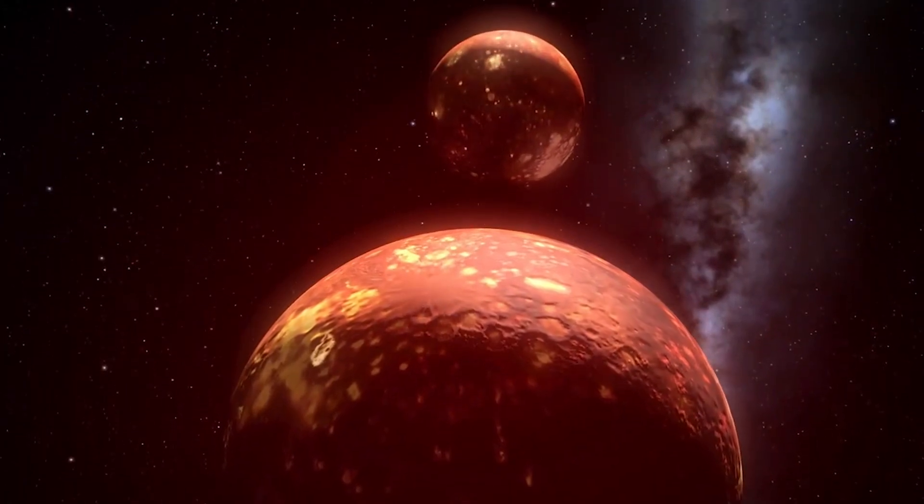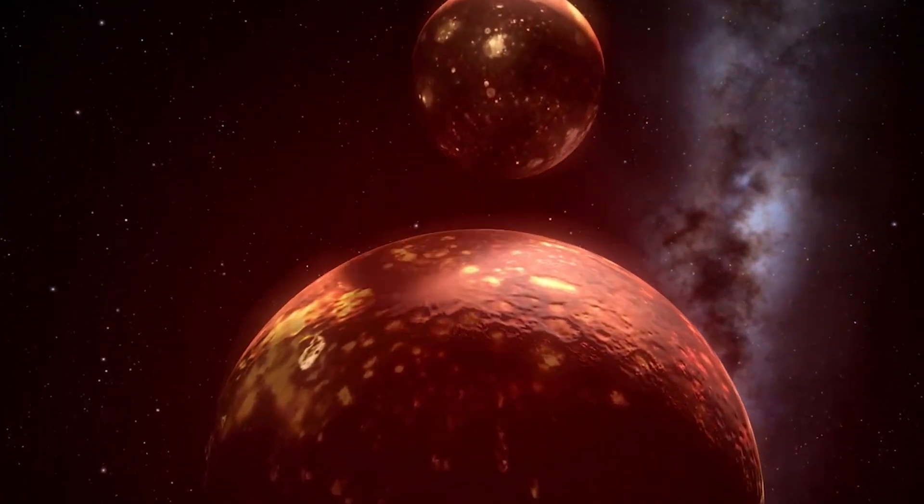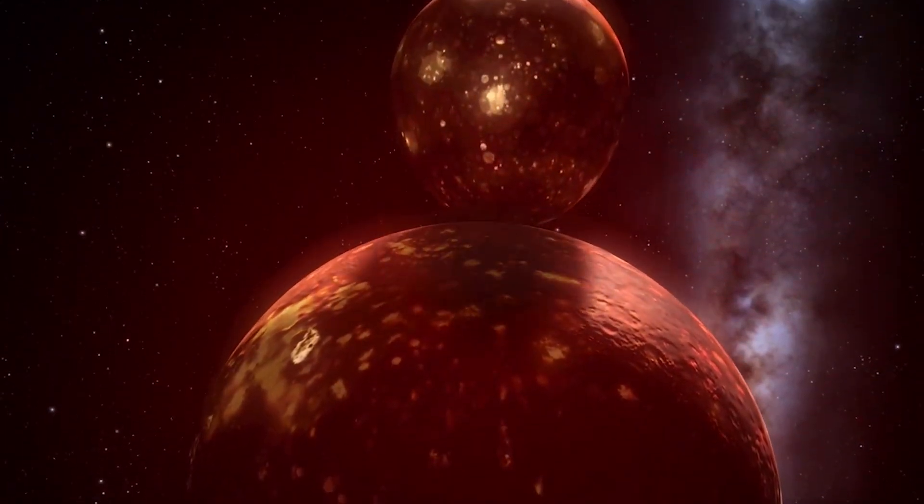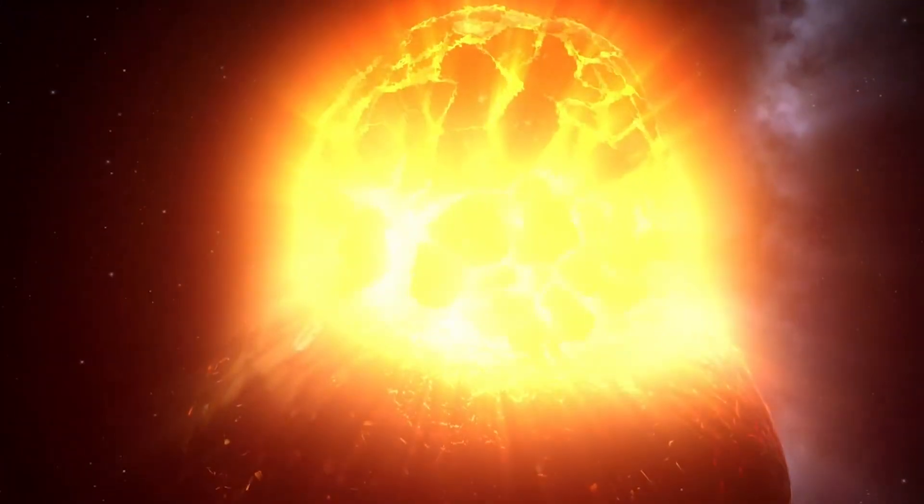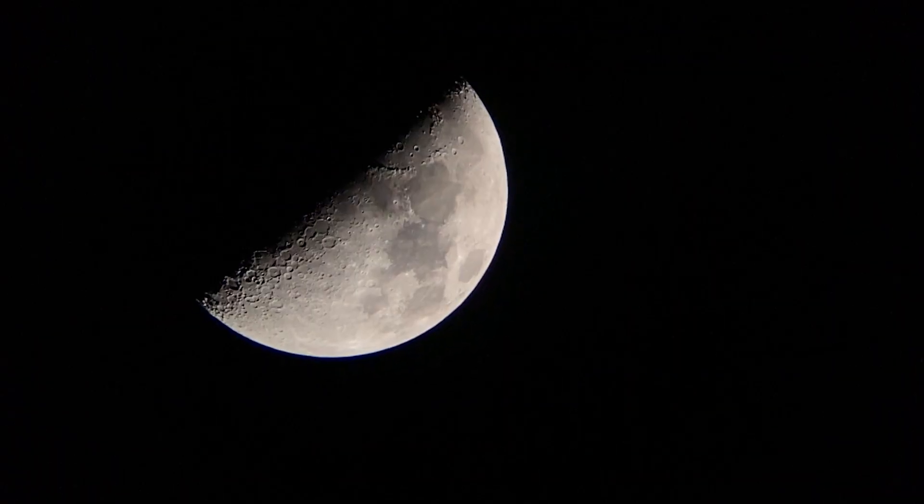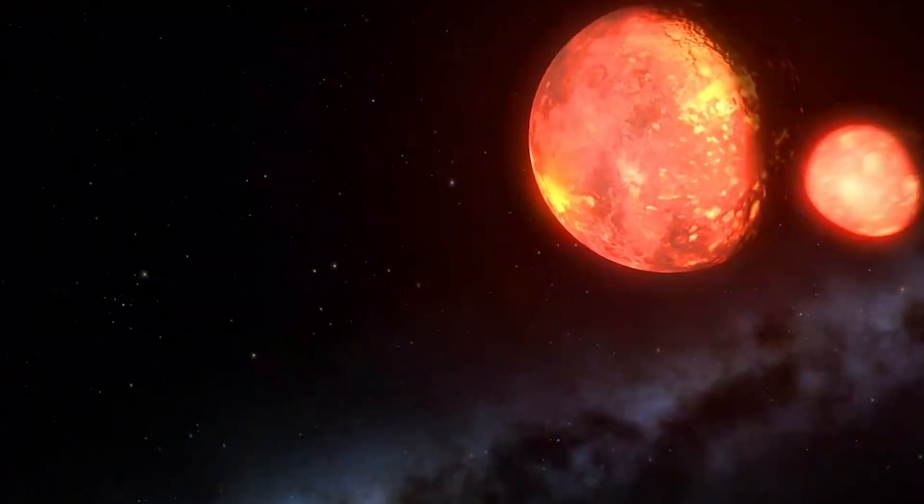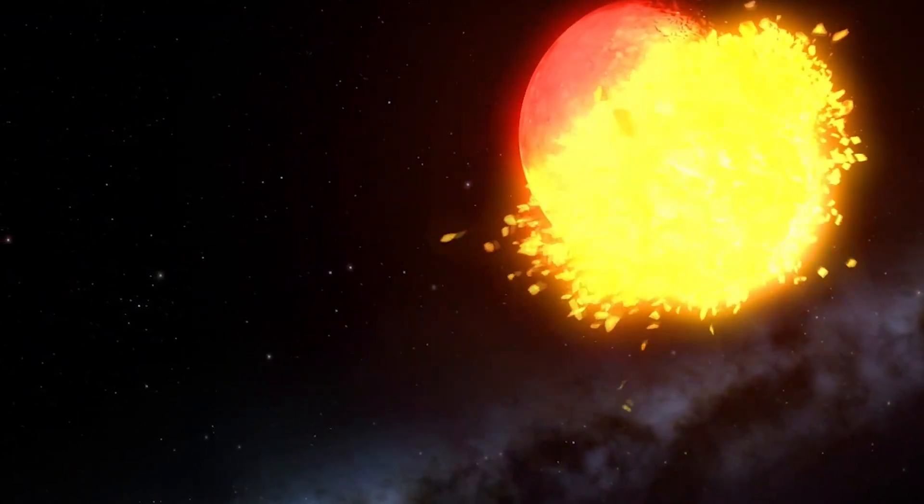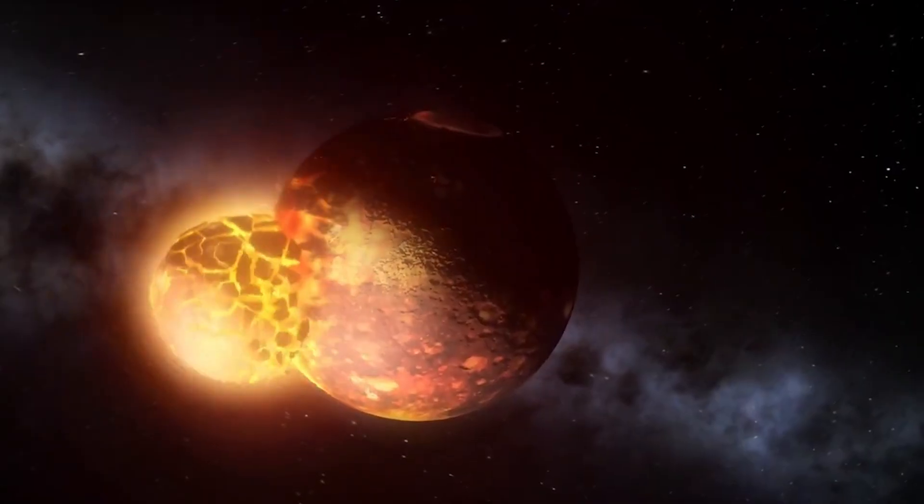The Big Splash is a popular theory about how the moon came to be. It says that the Earth crashed into another planet called Theia before life began. This crash sent pieces of matter into space which eventually came together to form the moon. The theory also says that the collision changed the way the Earth's elements were put together, which may have led to water and the atmosphere.